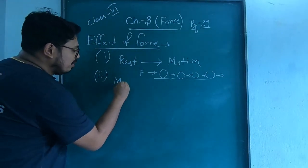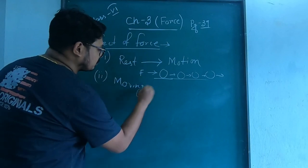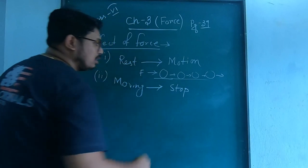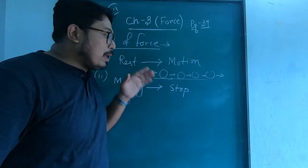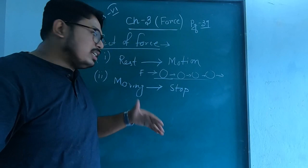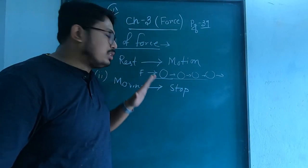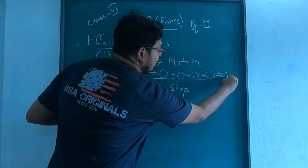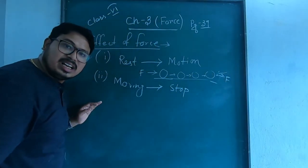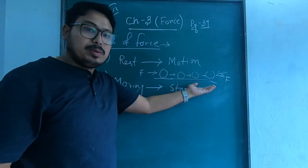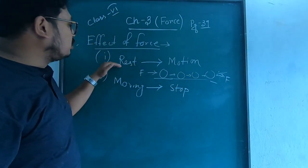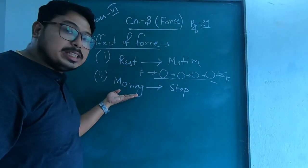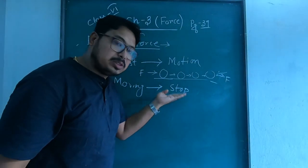Next effect: a moving body can be stopped. For example, a car or bike — when it is moving and we apply the brake, we stop it. Similarly, if a ball is moving and we apply force again, it will stop. So by applying force we can bring a moving body to rest.